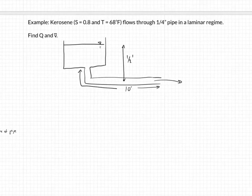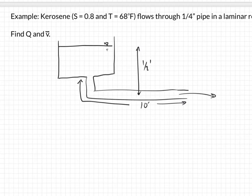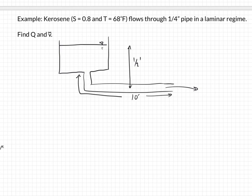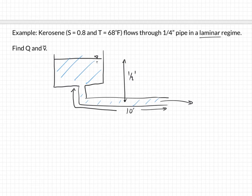Example: kerosene flows through a quarter-inch pipe in a laminar regime; find Q and V-bar. This is blue kerosene. One of these days I should back-calculate this to verify it actually is a laminar regime — it'd be hard to know a priori because you don't know V. We could test it at the end. Obviously in the problem, if they tell you it's laminar, you just accept that. So if we're solving this, we're going to use the energy equation.